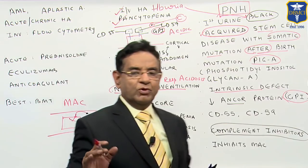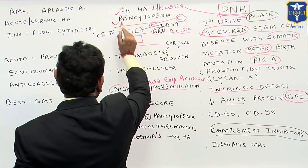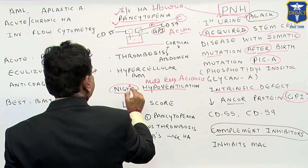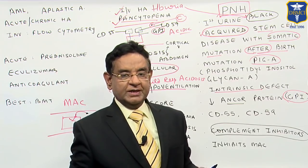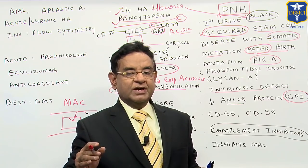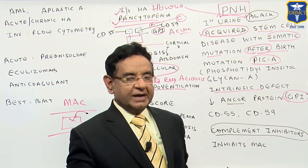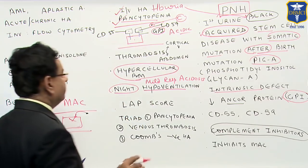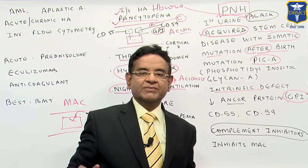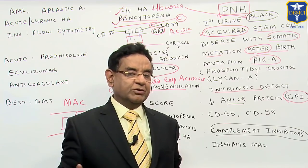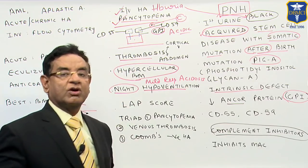One more important point: although pancytopenia is present in the peripheral smear, the bone marrow is hypercellular. So in this condition, if you go for bone marrow biopsy — which is normally not required — you get a hypercellular marrow. Additionally, there is increased thrombosis, which is very unusual. Remember there is pancytopenia and the platelet count is reduced, but still there is increased clot formation.